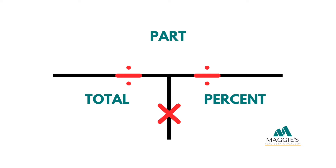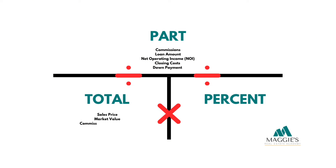Let's break it down. The T-Method is a foolproof method of solving math problems. For example, if you're given information regarding commission, loan amount, net operating income, or down payment, that would go on the top since it is a part or a portion of an entire or total amount. If you're given sales price, market value, or any total amount, that goes in the total column on the left side, and any percent or rate goes in the right column.